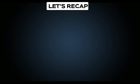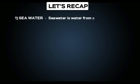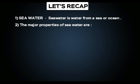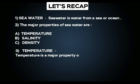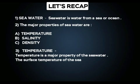Let's recap. First point: seawater is water from a sea or ocean. Second point: the major properties of seawater are temperature, salinity, and density. Third point: temperature is a major property of seawater, and the surface temperature of seawater is not uniform everywhere.